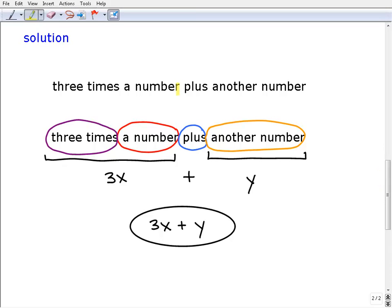So here's our phrase, three times a number plus another number. This is really critical in algebra to be able to interpret a verbal phrase and write it as a variable statement and as an algebraic expression.